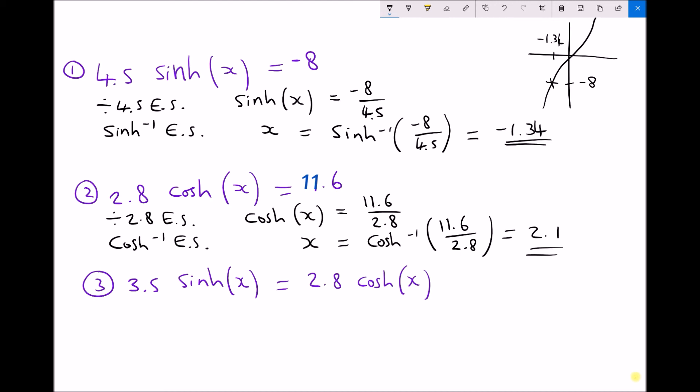Now the question here is, is that the only solution? Now if we sketch our cosh graph, hopefully you recall it crosses the y axis at 1. But it takes on this general shape like so. Now we've found a solution there that says when x equals 2.1, our function equals 11.6. But what we can see is that there's a second solution here. And that solution will be when x equals minus 2.1. It's a mirror image. So we have two solutions there.